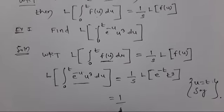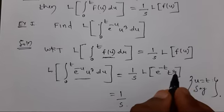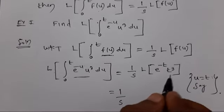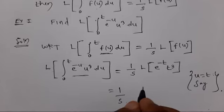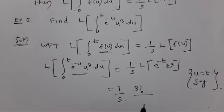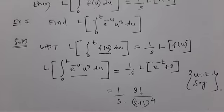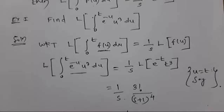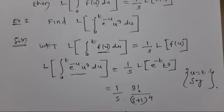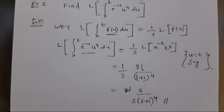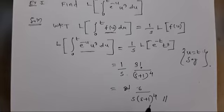This implies (1/s) times the Laplace of t cubed, which is 3! / s⁴ = 6/s⁴, with s replaced by s+1 due to the shifting property, giving (s+1)⁴ in the denominator. Therefore the answer becomes 6 / [s · (s+1)⁴]. Since 3! = 6, the required answer is 6 / [s · (s+1)⁴].